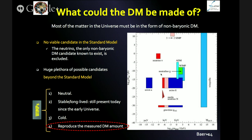Despite all this observational evidence at different scales, we actually don't know what the true nature of the dark matter particle itself is. There's not a good candidate in the standard model of particle physics — the neutrino, the only one we know, is excluded because it cannot account for the total matter content we measure. If you go beyond the standard model, a huge plethora of possible candidates arise. This plot shows the parameter space: on the x-axis you have the mass of the dark matter particle; on the y-axis, something related to the kind of interactions you expect. You can have many possibilities spread over orders of magnitude. From the cosmological and astrophysical point of view, we know some requirements: they must be neutral, stable or long-lived enough to be present since the early universe, cold — to explain large-scale structure — and they must reproduce the measured dark matter abundance.